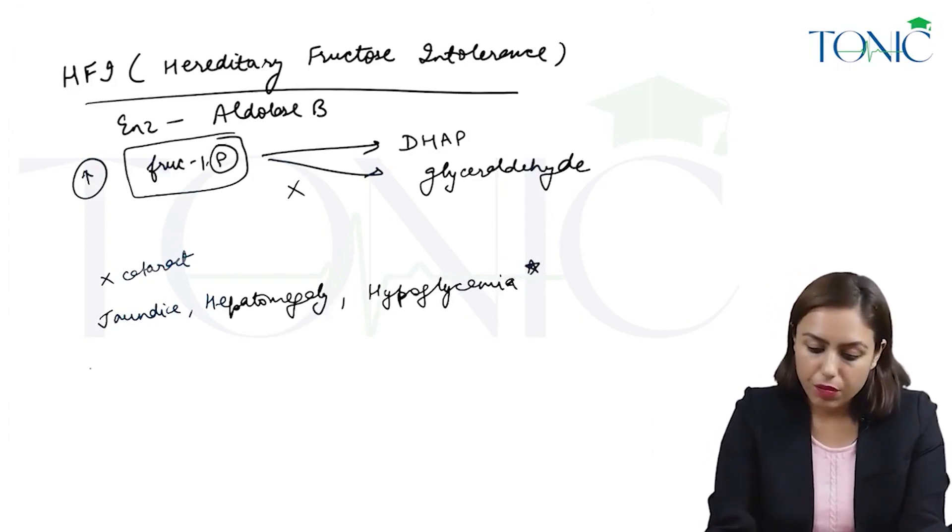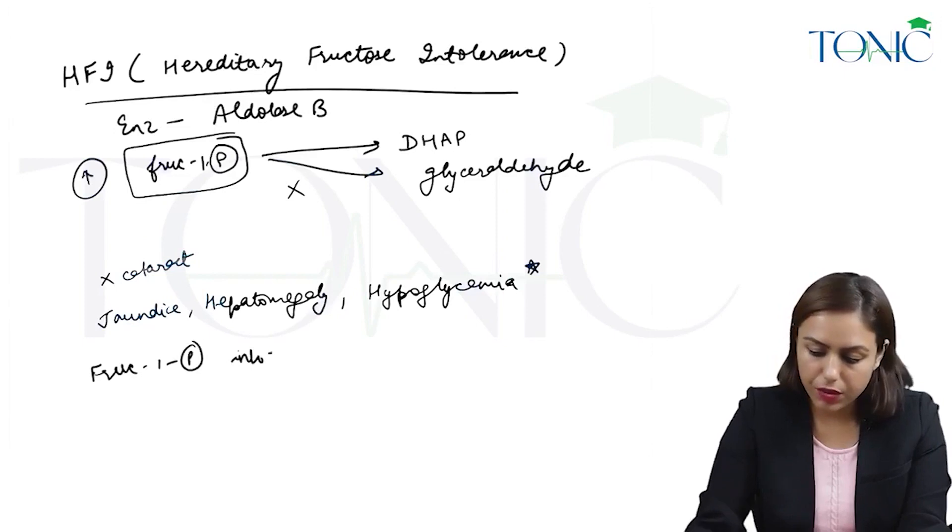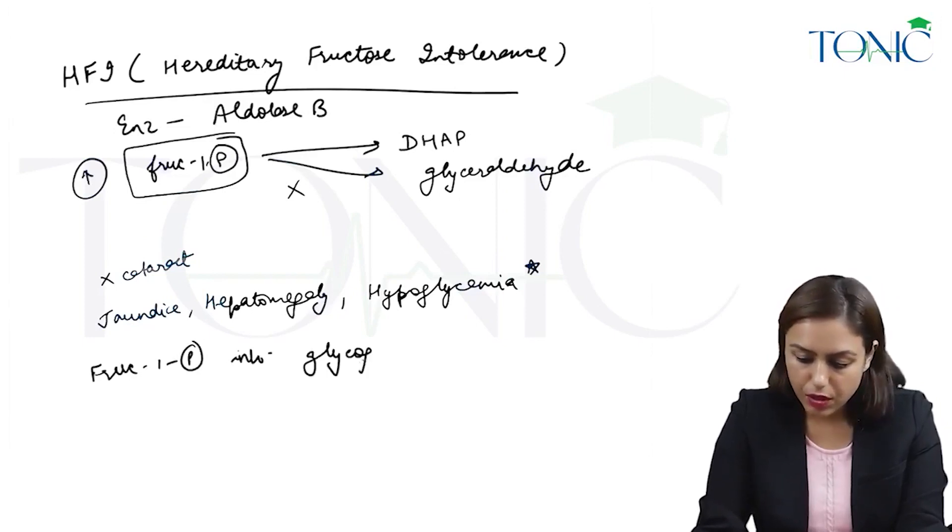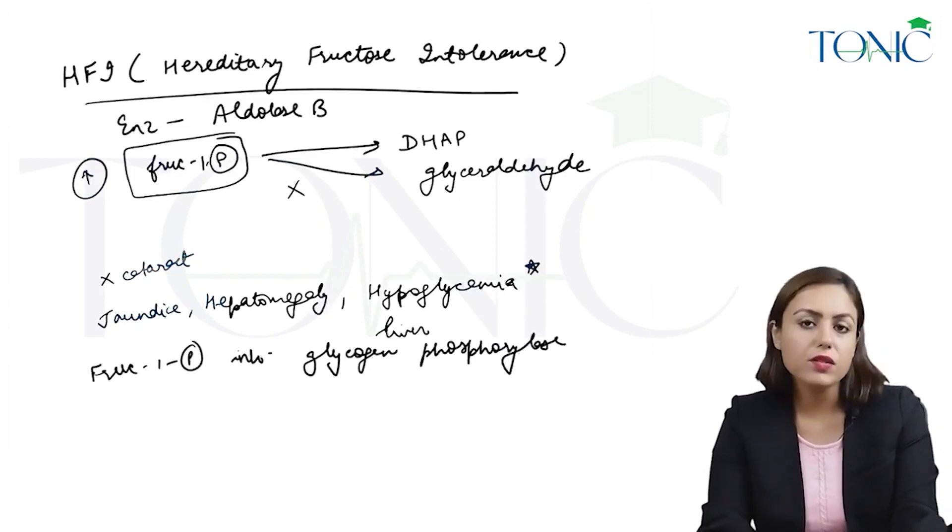Why hypoglycemia? Because fructose 1-phosphate inhibits liver glycogen phosphorylase.